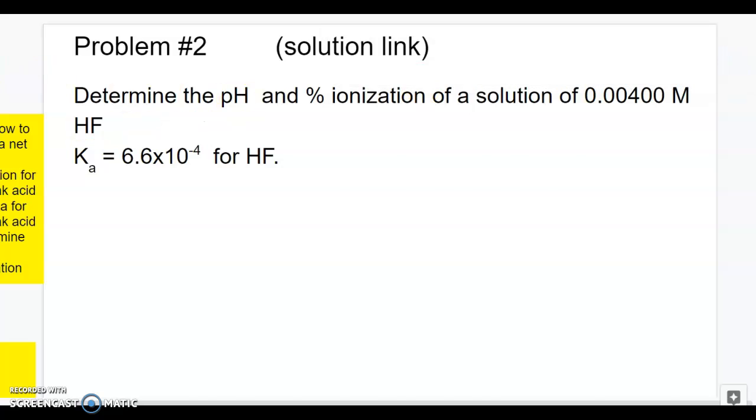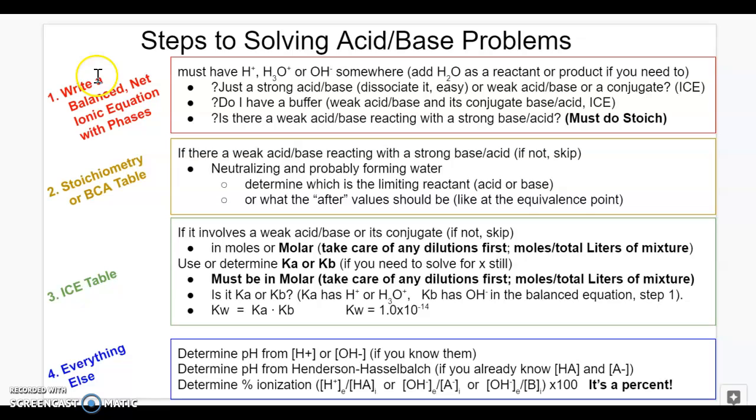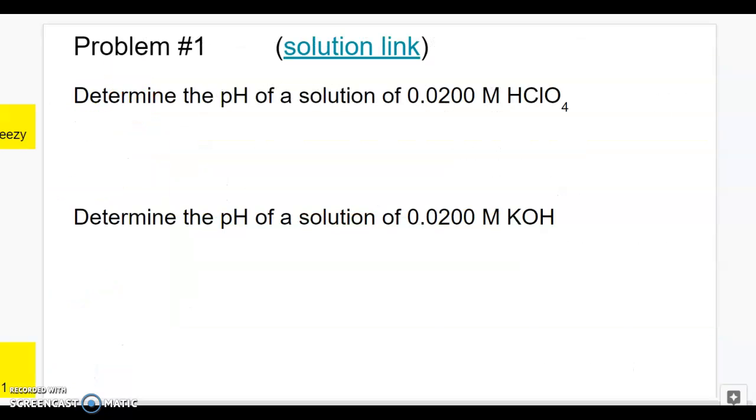And the scheme is we need to start with a balanced net ionic equation. And from there, we determine what kind of problem are we dealing with? Is it just a strong acid, strong base? Weak acid, weak base? Yep, we got to do weak acid. We're probably going to be doing an ICE table from there. We're not dealing with this weak acid or base mixing with a strong acid or base, so we don't have to do stoichiometry. Let's write out this balanced chemical equation and then go to the ICE table because they gave us a Ka value.